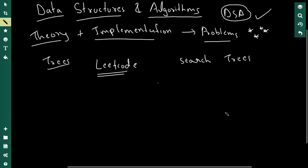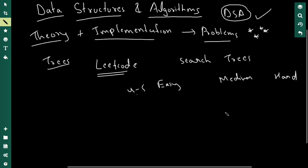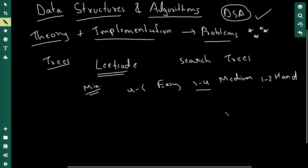There are three categories of problems: easy, medium, and hard. Try to solve at least four to five easy, three to four medium, and one to two hard problems — this is the minimum. Some hard problems you may not be able to understand even after seeing the solution, and that's okay — put those under an 'unsolved' category in your notes. The ideal amount is to solve as many as you possibly can.